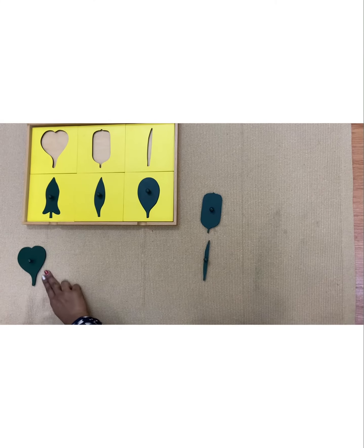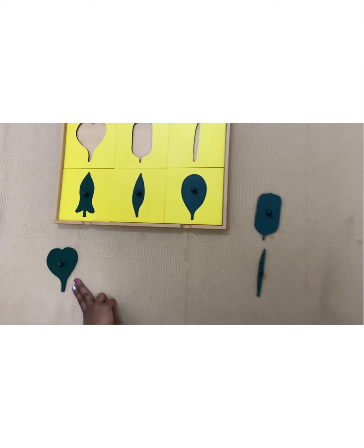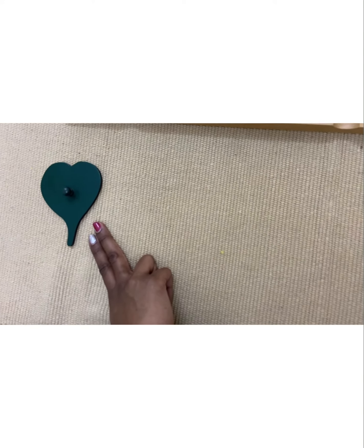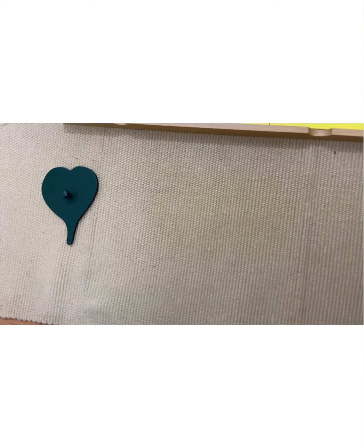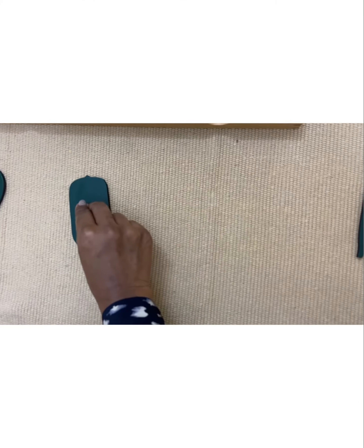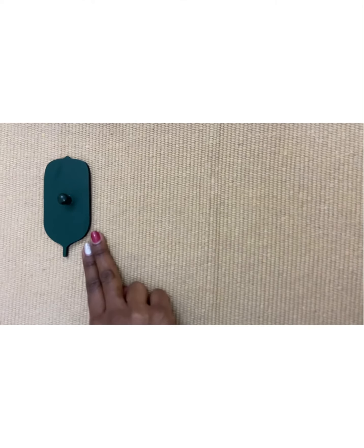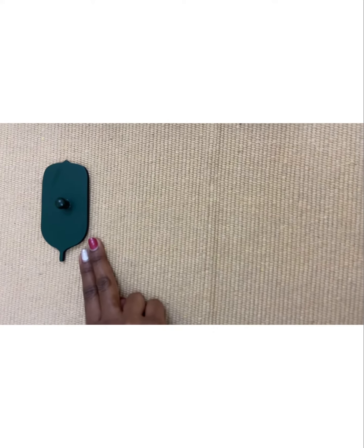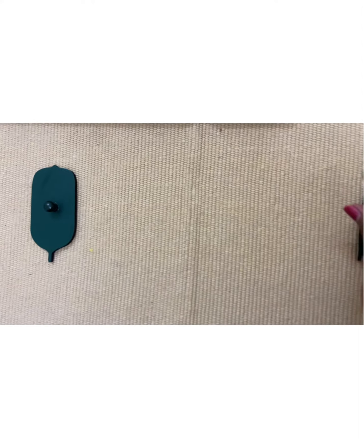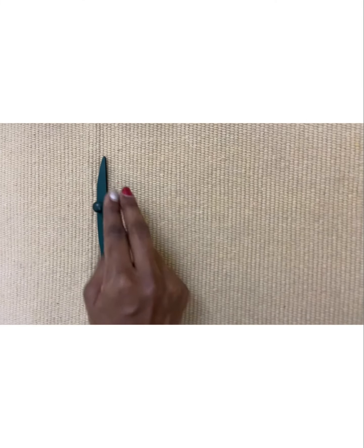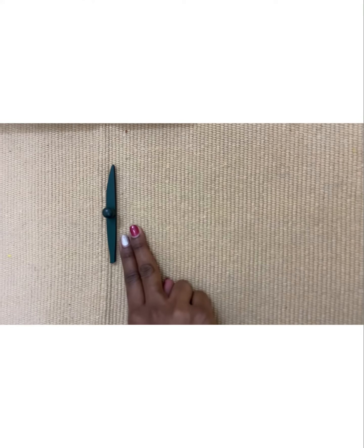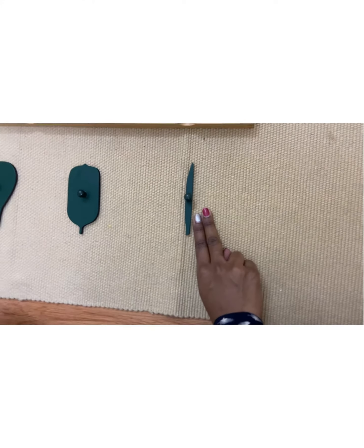This is chordate. This is oblong. This leaf is oblong. Oblong. This is linear. Linear. Very good.